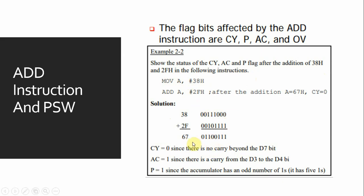If we find the addition, the output will be 67h. I have discussed this in detail in my previous video lecture, so I will put the link in the description. Here you can see that since there is no carry beyond D7, the CY will be 0.